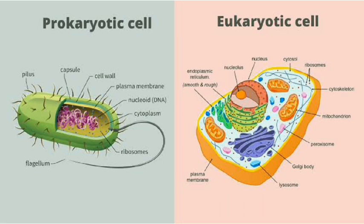In prokaryotic cells, carbohydrates and sterols are not found in the plasma membrane, while in eukaryotic cells they serve as receptors on the plasma membrane. Cell division occurs through binary fission in prokaryotic cells and through mitosis in eukaryotic cells. Ribosomes are 70S in prokaryotic cells and 80S in eukaryotic cells. Cytoskeleton is absent in prokaryotic cells and present in eukaryotic cells.